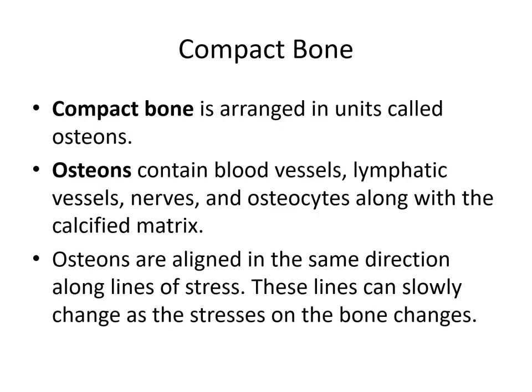That's it for our quick overview of the axial skeleton. Now let's look at the structure of bone. We have two types: compact bone and spongy bone. Compact bone is made up of units called osteons — cylindrical structures that in cross-section appear to be comprised of many layers like an onion. The osteons contain blood vessels, lymphatic vessels, nerves, and osteocytes. Osteocytes are living cells that maintain the calcified matrix of the bone, which contains minerals that make the bone rigid. Osteons align themselves along lines of stress.